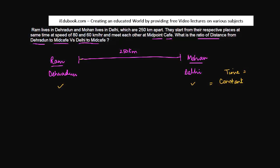At a speed of 80 and 60 kilometers an hour. The speed is 80 kilometers an hour, here it is 60 kilometers an hour. And they meet each other at midpoint cafe. There is no cafe like this on that route insofar as my knowledge is concerned, but let it be.